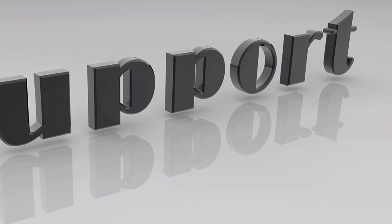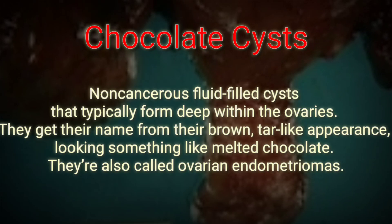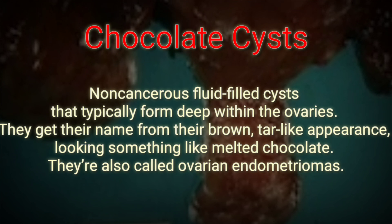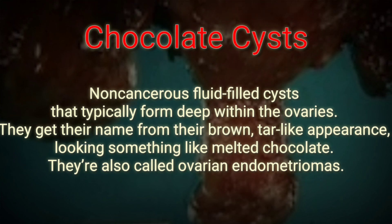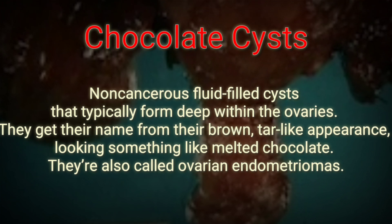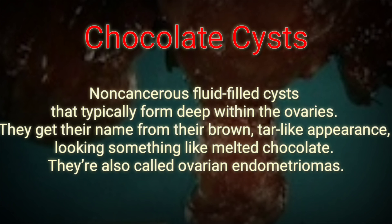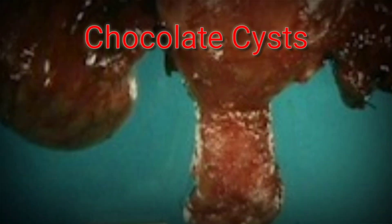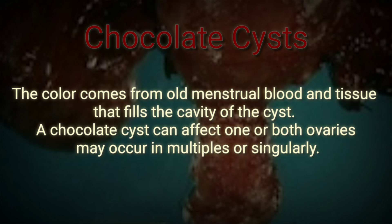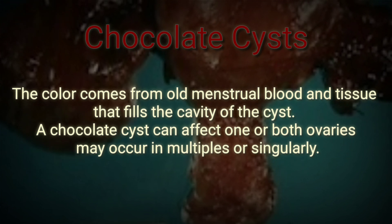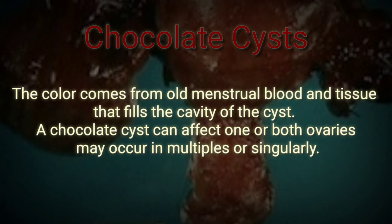Chocolate cysts are non-cancerous, fluid-filled cysts that typically form deep within the ovaries. They get their name from their brown, tar-like appearance, looking something like melted chocolate. They are also called ovarian endometrioma. The color comes from old menstrual blood and tissues that fill the cavity of the cyst.